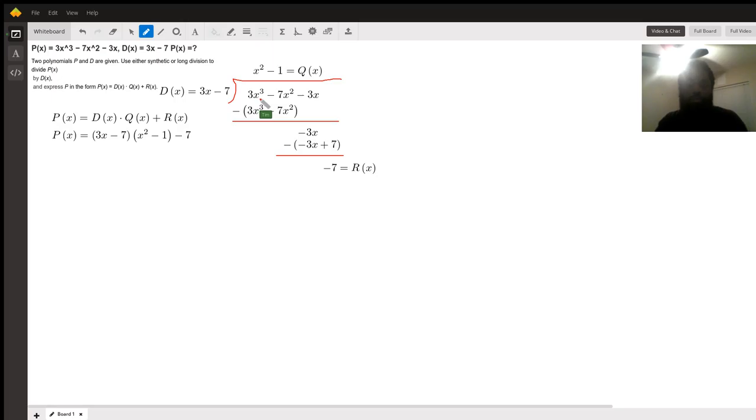So we begin by dividing 3x cubed by 3x to give us x squared, and then we multiply x squared times negative 7 to give us negative 7x squared.